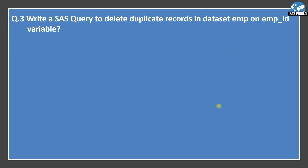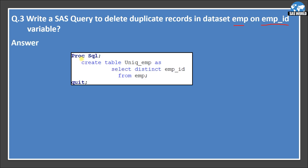The next question is: write a SAS query to delete duplicate records in dataset EMP on the EMPID variable. This is a simple one. We use CREATE TABLE unique AS SELECT DISTINCT * FROM EMP. The DISTINCT keyword is what deletes the duplicates.